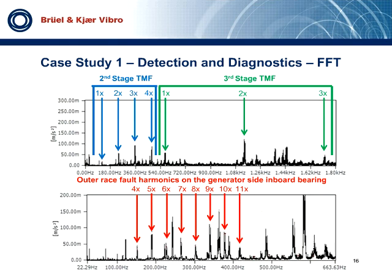On the bottom plot, you can also see a bearing defect frequency generated from the IMS generator side inboard bearing. BPFO, or ball passing frequency outer race, is assessed to be present due to a defect in the load zone of the stationary outer race. The rotor end bearing looseness can change the shaft dynamics, which increases the load on the generator side bearings.